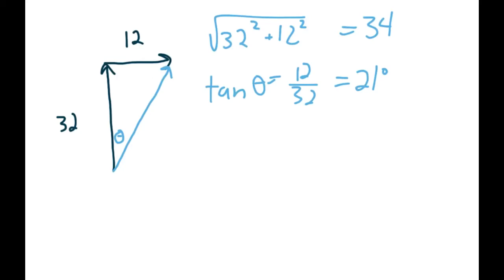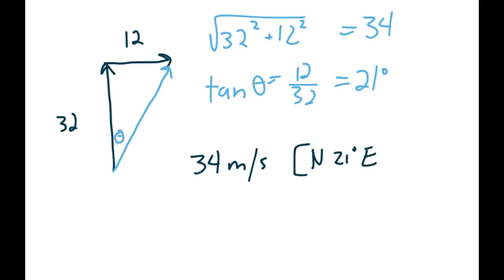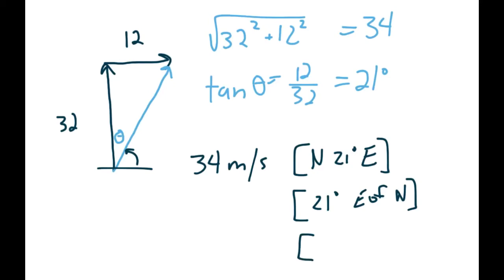So those are our two answers. Make sure you write them properly - the original question was in meters per second, so we'd have 34 meters per second. Our angle would be north 21 degrees east, or you could write it as 21 degrees east of north. Or using the math version, it would be 90 degrees minus 21, which would be 69 degrees.